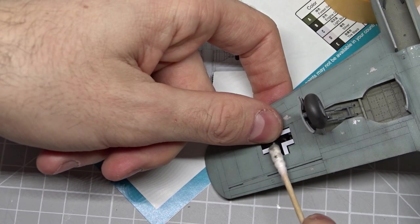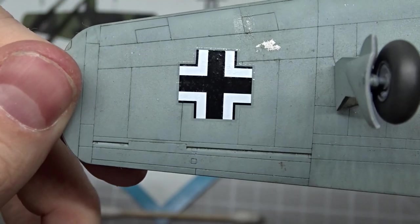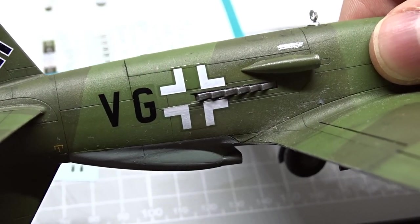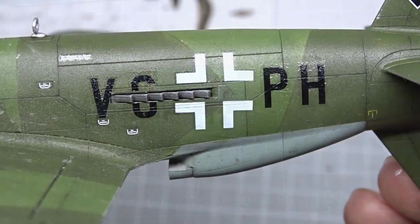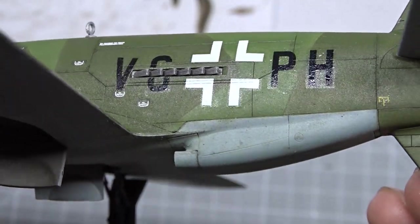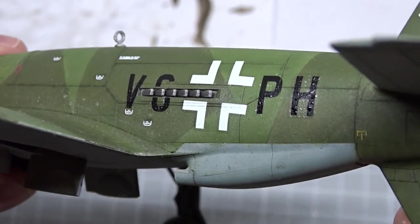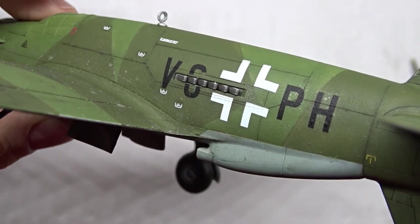The problem with these decals was that there was a lot of silvering. Also I had to cut some decals in half so I could place them around these exhausts. There was still a lot of silvering so I tried to remove some carrier film and I used a lot of setting solutions.